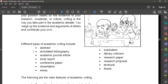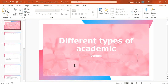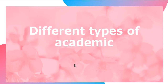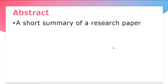There are different types of academic writing. The first one is the abstract, which is a short summary of a research paper. When you write a research paper, you are researching an issue and trying to prove something or answer a problem through research. At the beginning of the research paper, you can find an abstract — a short summary of what is in the research paper.